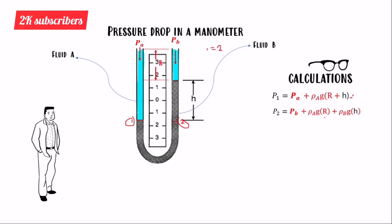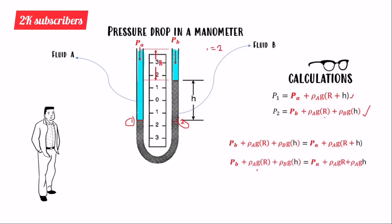Now we equate pressure at point one to pressure at point two using our principle P1 = P2. Setting the two expressions equal allows us to solve for the pressure drop between the two fluids.